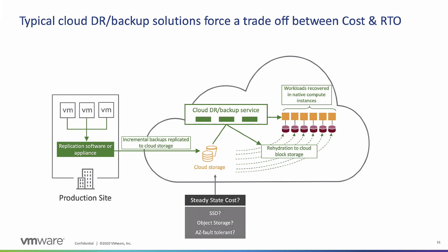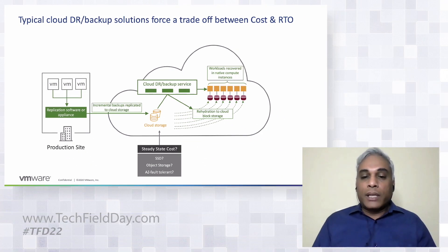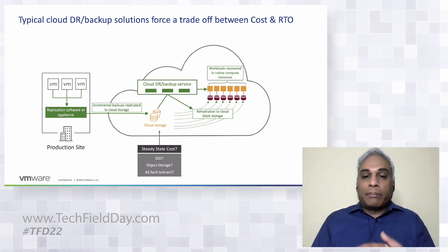The first question to ask is: what's my cost in steady state? DR solutions are essentially an insurance business — you don't want to pay more for DR than your primary data center. If you use SSD storage like EBS, you can run workloads directly, but the price is shockingly high, especially as data grows, and becomes prohibitively expensive.